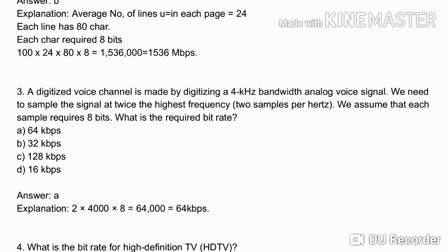The bandwidth is 4 kHz, which equals 4000 Hz. The sampling frequency is 2 samples per Hz (twice the bandwidth), so 2 × 4000 = 8000. Each sample has 8 bits, so 8000 × 8 = 64,000 bits per second, which equals 64 kbps. Option A is the correct answer.